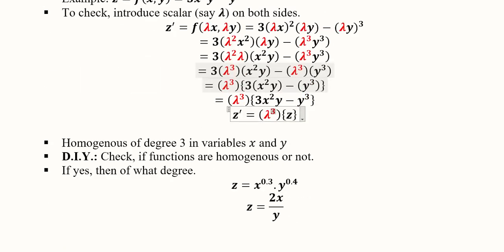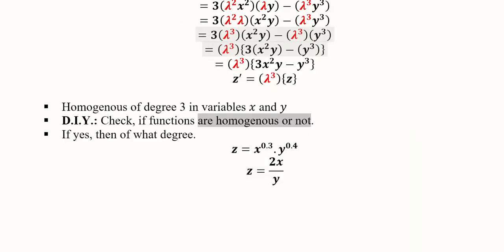We can also call it that this function z was homogeneous of degree 3 in variables x and y. This is DIY for you. You can do it yourself. We can see that if the given functions are homogeneous or not, and if they are homogeneous, then of what degree. So this is one example that you can do for yourself, and this is another example.